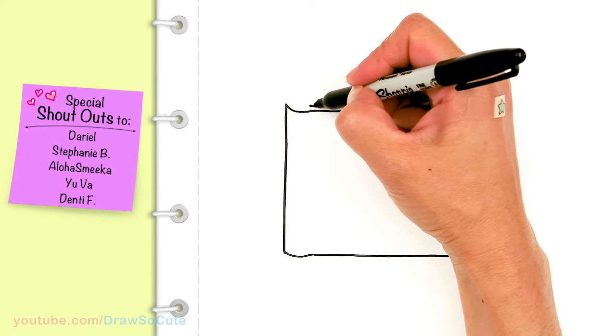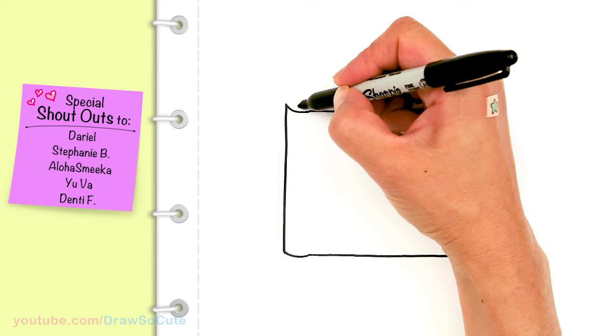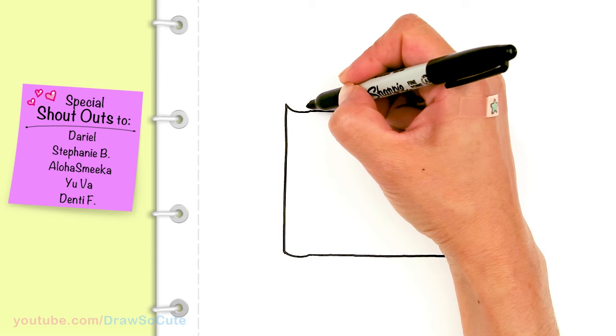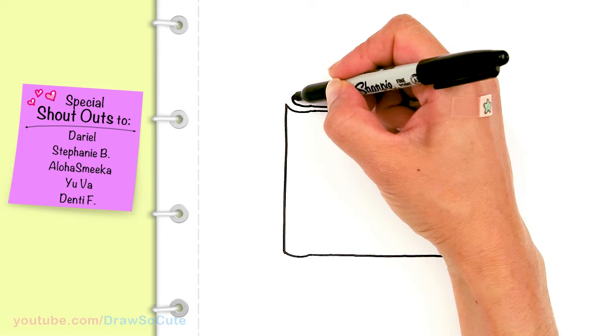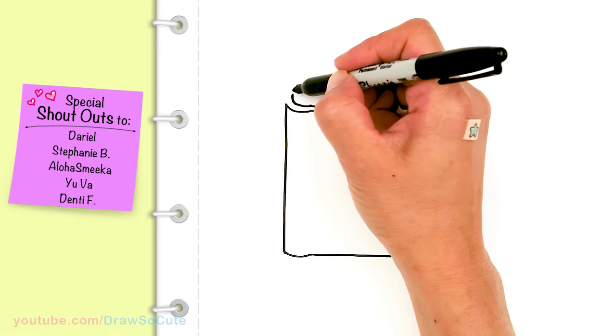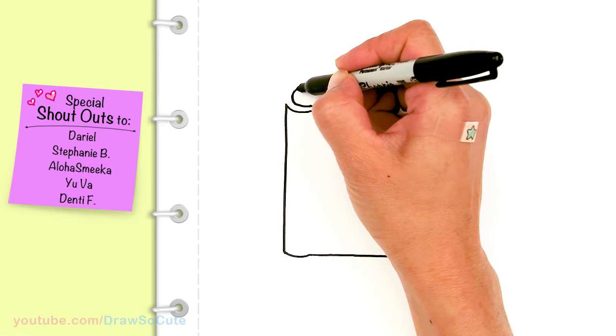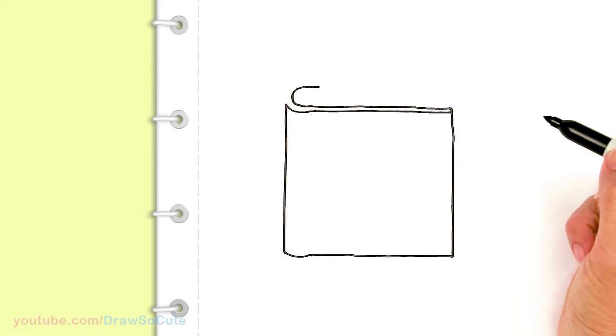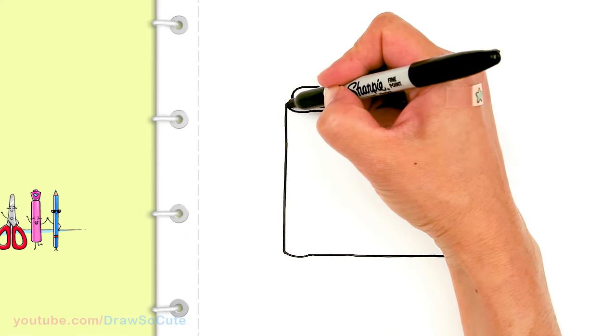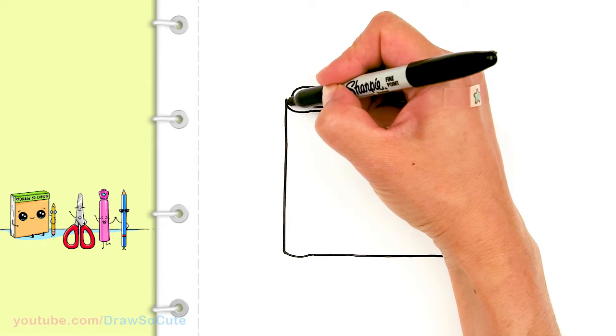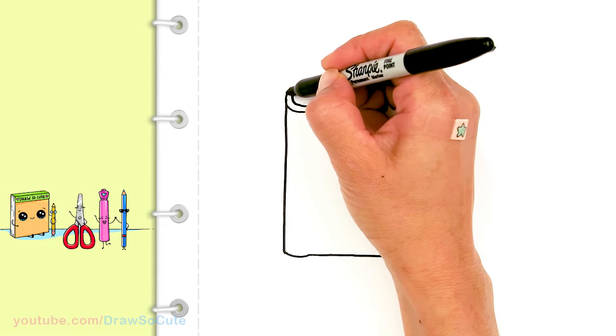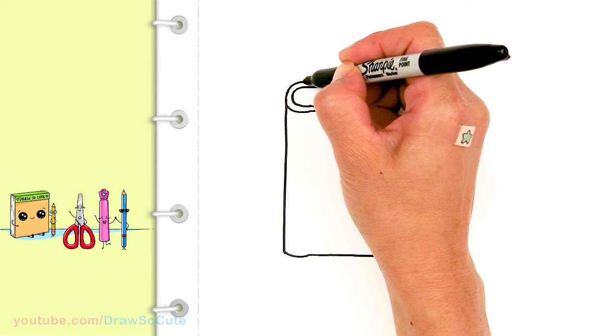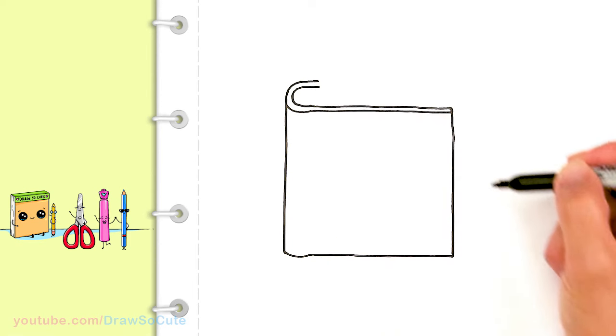In this area right here, I'm going to curve it. So I'm going to curve it very close to this curve I have. And I'm going to bring it up about this much, however thick you want your book to be. And then right here, I'm just going to continue my curve following the top.